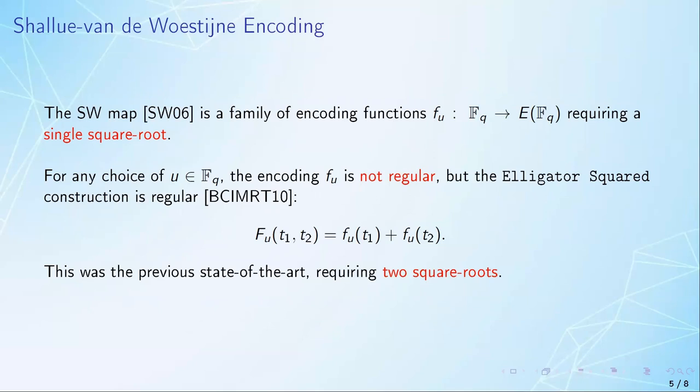There is a construction, which we call Elligator Squared, that solved this by taking two evaluations of fu and adding them together. It can be shown that this new construction, with a domain twice as large, is in fact admissible, even though now it requires two evaluations of f and hence two square roots, and this represented the state-of-the-art so far.